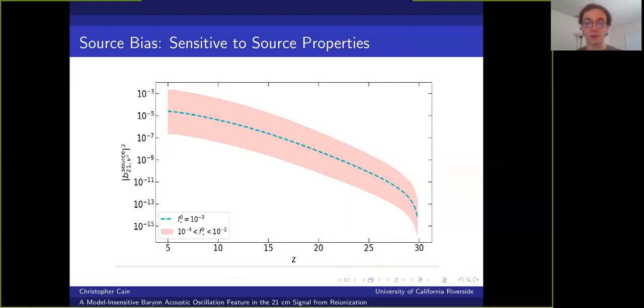And for a fiducial efficiency of 10^-3 shown here by the dashed cyan curve, the source bias is pretty similar to the sink bias during reionization. But as indicated by the pink shaded region, it could be two orders of magnitude larger or smaller for the parameter range that we consider here. And this is only one of several POP3 parameters that enter the source bias calculation that are theoretically uncertain. And so the true uncertainty is probably much larger than this. So what we see here is that unlike the sink bias, the source bias is rather difficult to constrain theoretically because it depends so strongly on highly uncertain source properties.